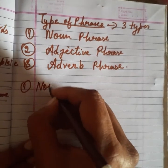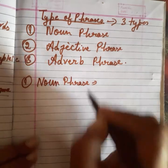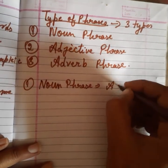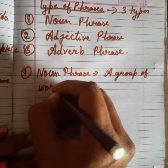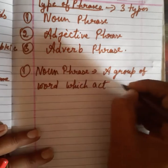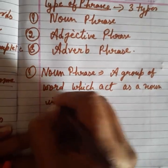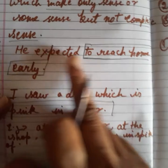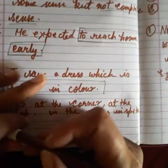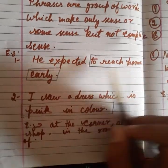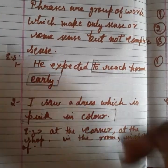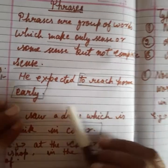सबसे पहले discuss करेंगे noun phrase। When any group of words which act as a noun in a sentence, that is called a noun phrase. जैसे 'he expected to reach home early' — यह यहाँ पर place के बारे में बता रहा है। जिसका भी answer हमको 'what' और 'where' करके मिल जाता है, वो actually noun phrase हो जाता है।